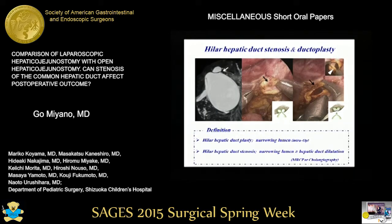We've been focusing on hilar hepatic duct plasty to prevent postoperative complications. The common hepatic duct is further resected at the confluence of the hepatic duct, and if indicated, we make a transverse longitudinal incision along the hepatic duct confluence from the hepatic hilum to the bilateral hepatic ducts to obtain sufficient drainage and a large anastomotic stoma.